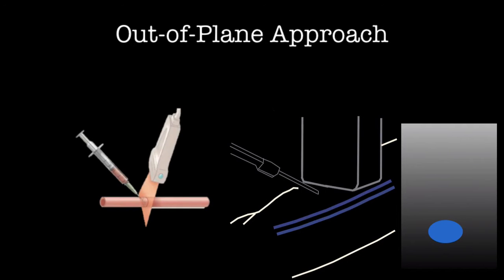The first technique is called the out-of-plane approach. In this approach, the needle as well as the vein are seen in cross section, with the needle appearing as a dot and the vein appearing as a circle deep on the screen.